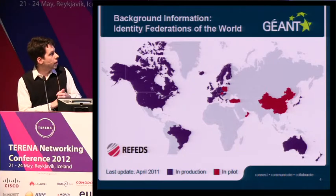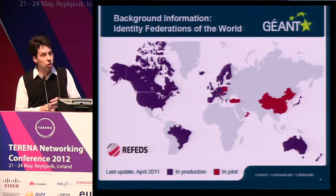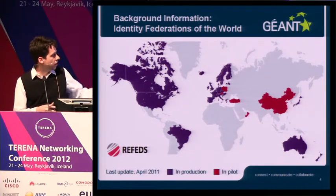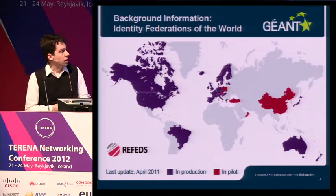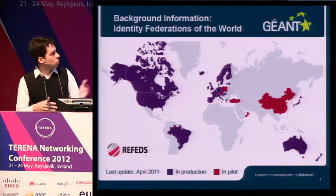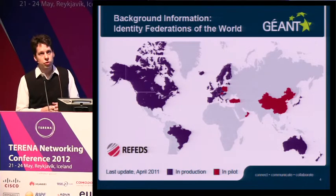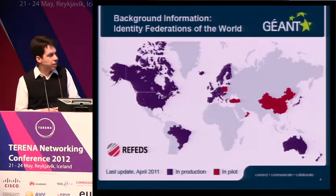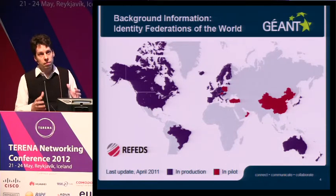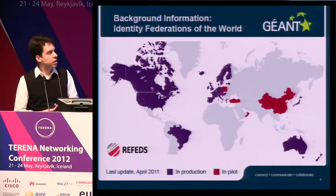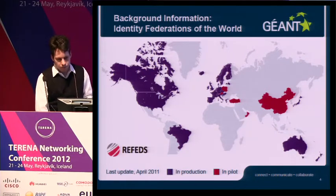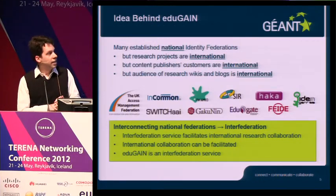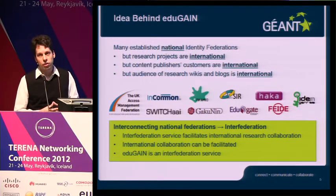This is a map that shows the world and all the identity federations that were known in April 2011. As you can see, there are quite many of them already, mostly in the Western world. And by now, one year later, there are probably even more federations available. These are all national identity federations, which means that they work only within one country.